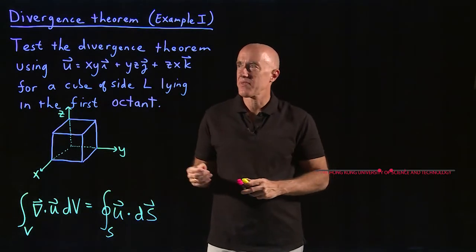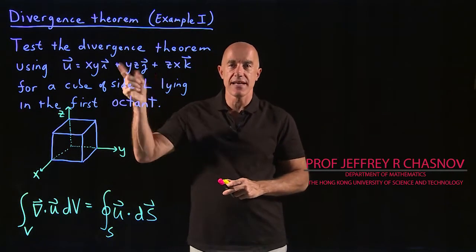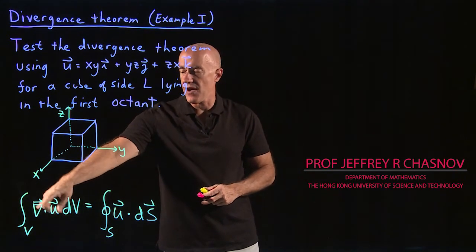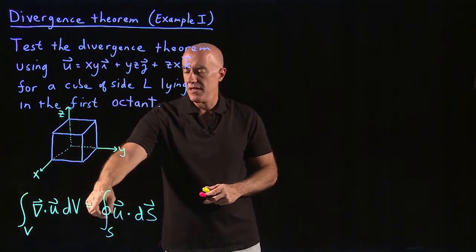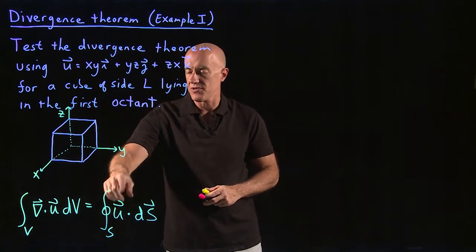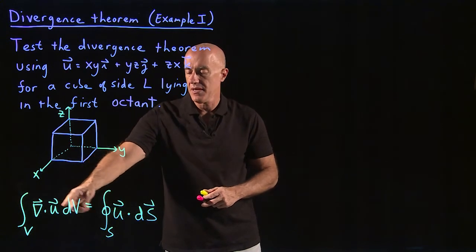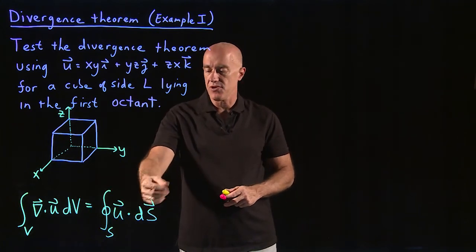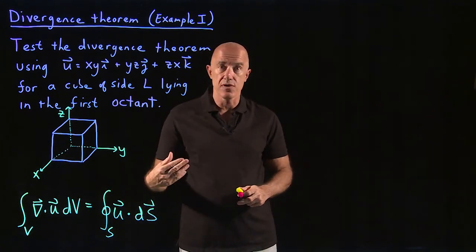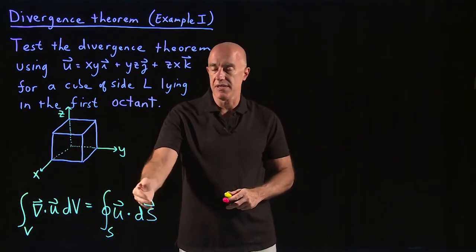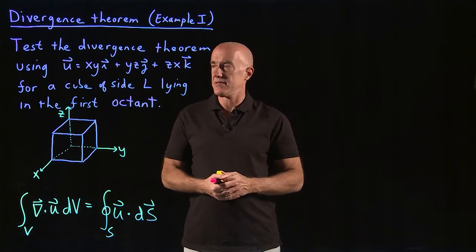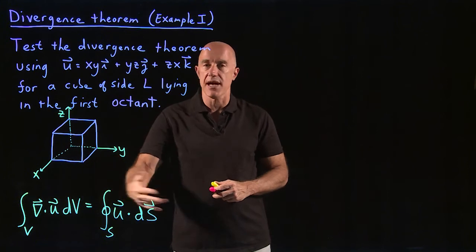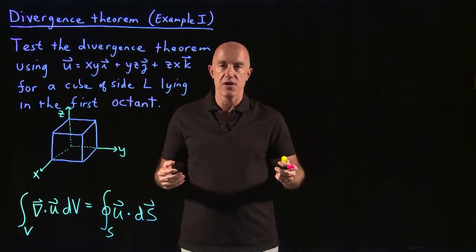In this video, I want to test the divergence theorem. The divergence theorem states that the integral over the volume of del dot u dV equals the surface integral over the surface enclosing the volume of u dot dS, where dS is the normal vector pointing outward from the volume times the element area dS. To test the theorem, I want to compute both sides of this equation and show that they're equal.